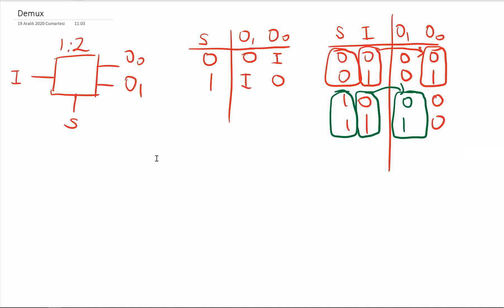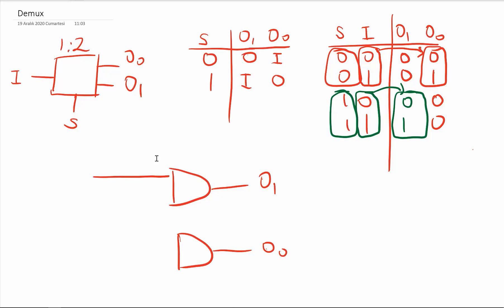Now let's look at the inside circuitry of this D-multiplexer. We have two outputs: output 1 and output 0. I will have an AND gate for each output. The I input goes to both AND gates, and I select using the S signal. S is only enabling one AND gate at a time. If S is 1, the output 1 AND gate is enabled. If S is 0, the output 0 AND gate is enabled.